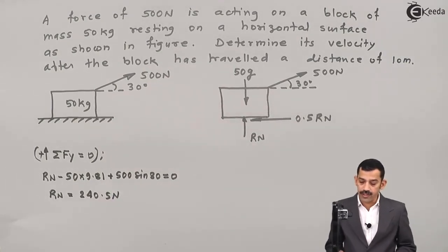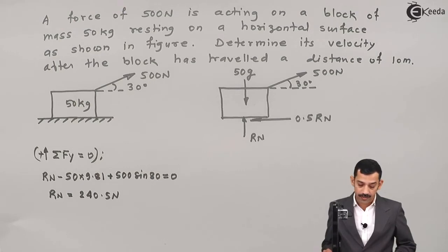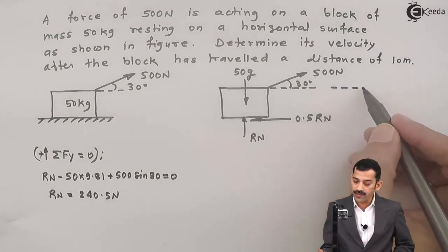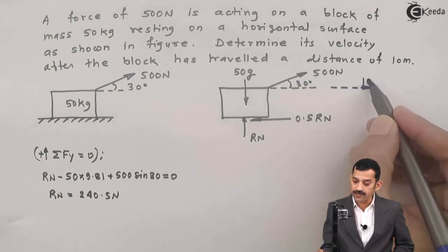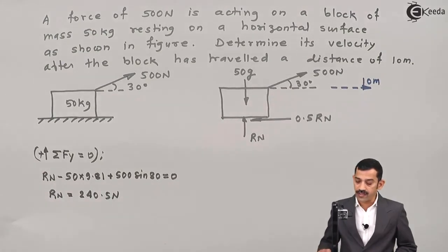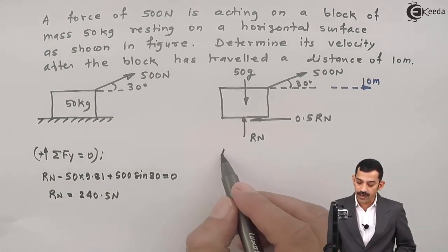Once you get normal reaction, now easily applying work-energy principle you will get velocity of the block. Displacement of block is in the rightward direction. It is given displacement as 10 meters. Rightward or leftward is not given, but as 500 Newton force is acting such that its horizontal component acts in rightward direction, block has to move in rightward direction.